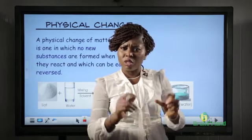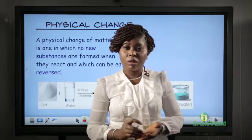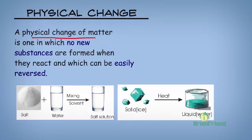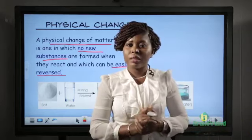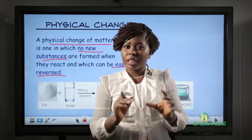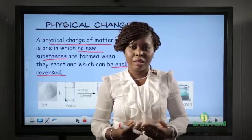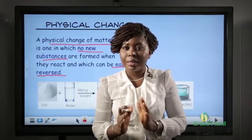This means that matter undergoes changes, and the changes that matter undergoes are what we refer to as physical and chemical changes. A physical change of matter is one in which no new substances are formed when they react and which can be easily reversed. When we say no new substances are formed, we mean that no other substance is formed outside the reacting substances, because in a physical change the chemical properties or internal makeup of the reacting substances were not altered.